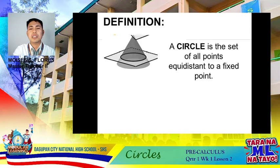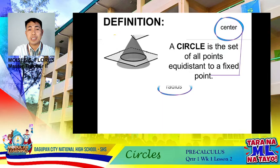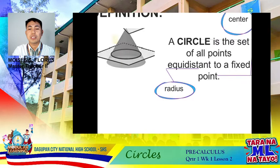A circle is a set of all points equidistant to a fixed point. That fixed point is called the center. The equal distance from the center to the points along the circle is called the radius.